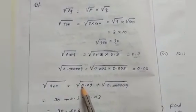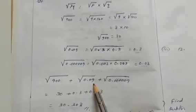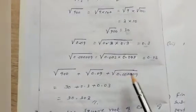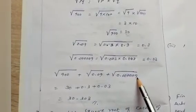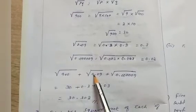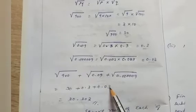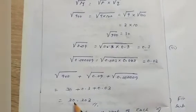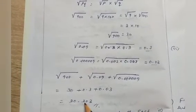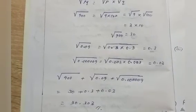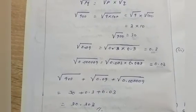Therefore √900 + √0.09 + √0.000009 = 30 + 0.3 + 0.003 = 30.303. The answer is 30.303.